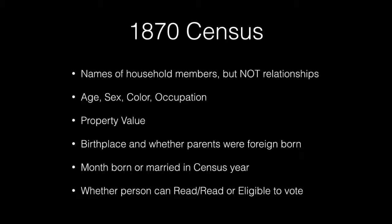The 1870 Census has the names of the individual members but not their relationships. It shows the age, sex, color, occupation, and property value. It shows the birthplace and whether the parents were foreign born. It shows the month born or married in the census year, and whether a person can read or write, or was eligible to vote.